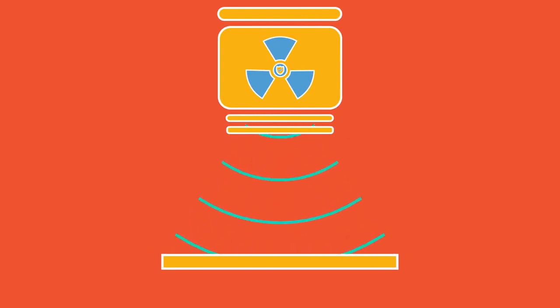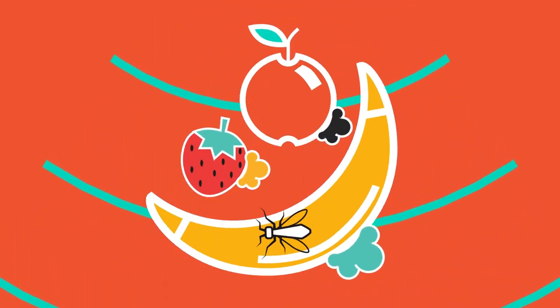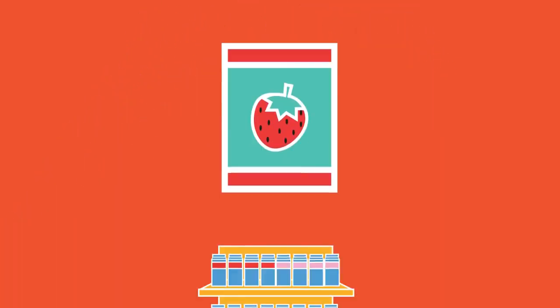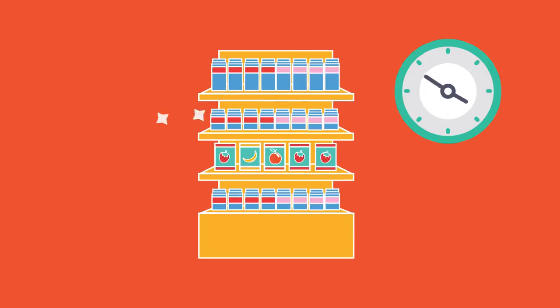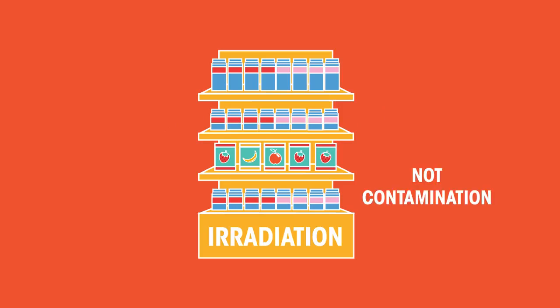Gamma radiation is used to sterilise hospital equipment and is also used to kill bacteria, mould and insects from food before the food is packaged. This increases the shelf life of the food. The food is safe to eat and doesn't become radioactive itself as it's irradiation rather than consumption.